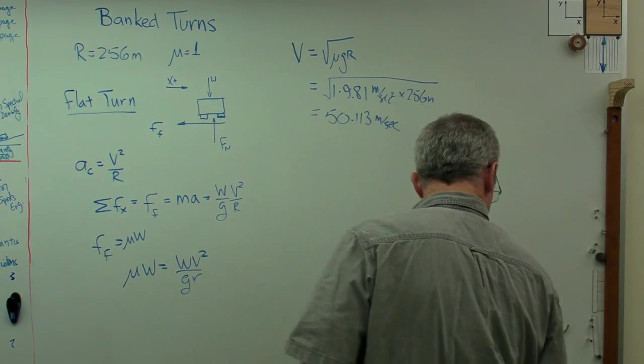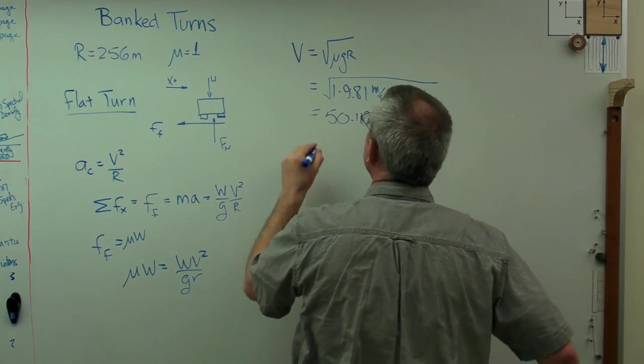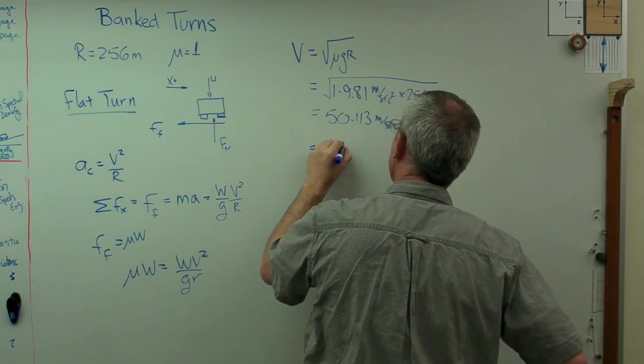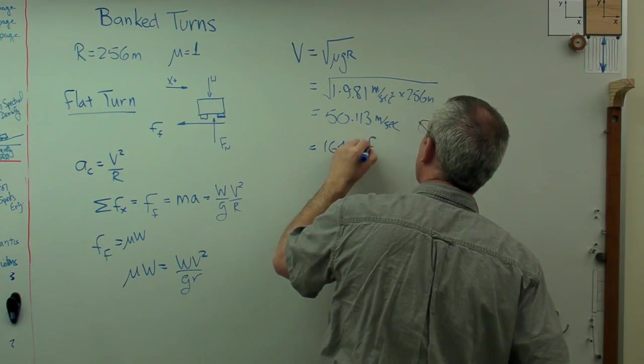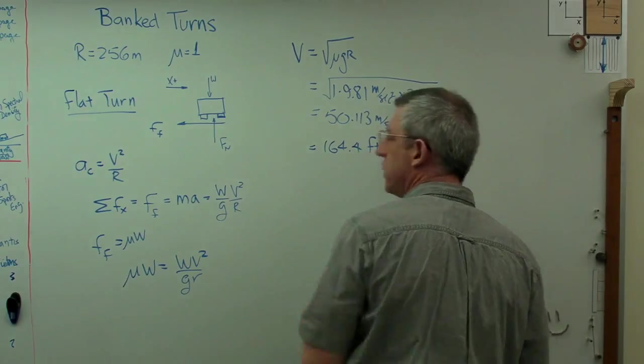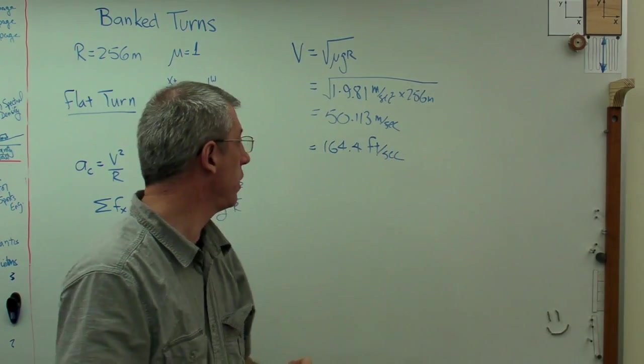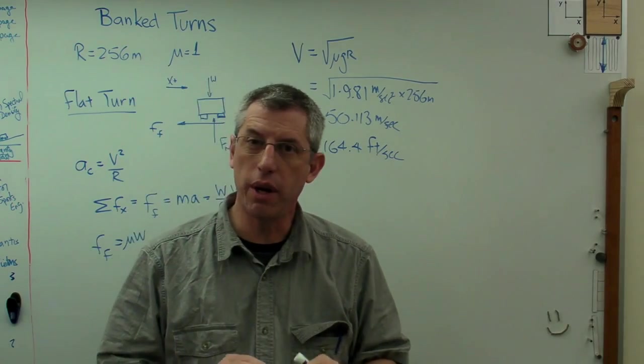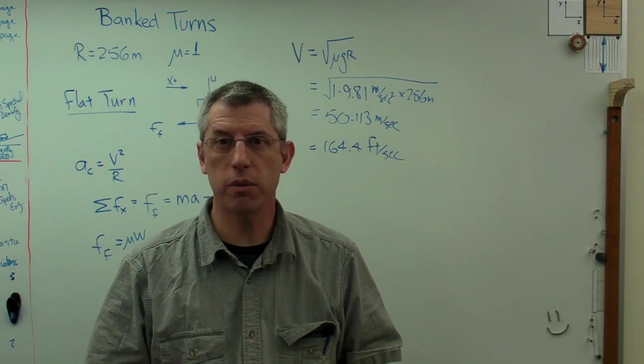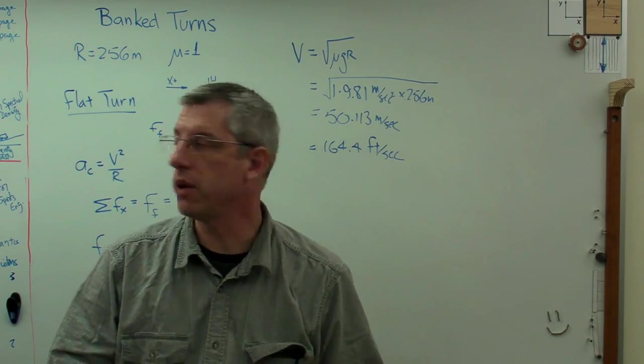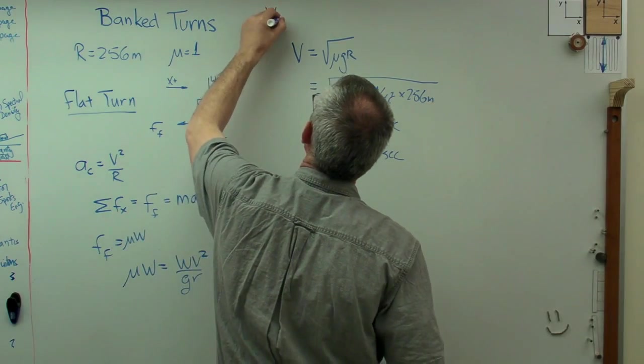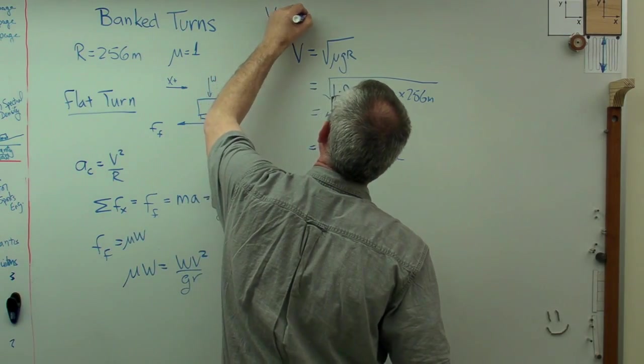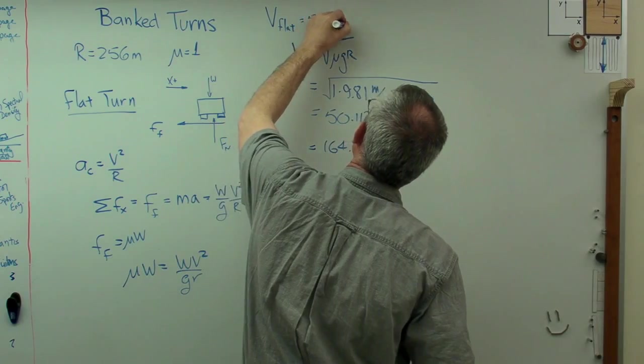If you want to do this in English units, I converted it, that's 164.4 feet per second, which turns out to be about 112 miles an hour. So if you don't angle the track, that's the maximum speed you can get without aerodynamics. Let's call that v flat equals 50.113.